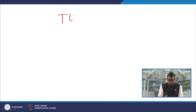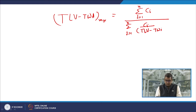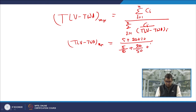From the equation discussed in the previous module, the TLV-TWA for the mixture is the summation of concentrations of all components (i = 1 to n) divided by the summation of (Ci / TLV-TWA_i) for each component. Substituting the values given in the problem statement for each component's concentration and threshold limit value.